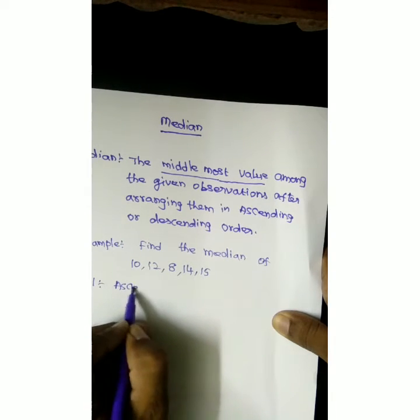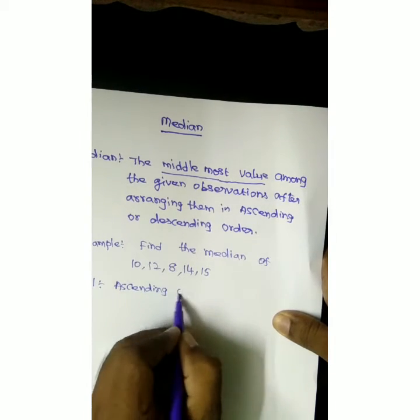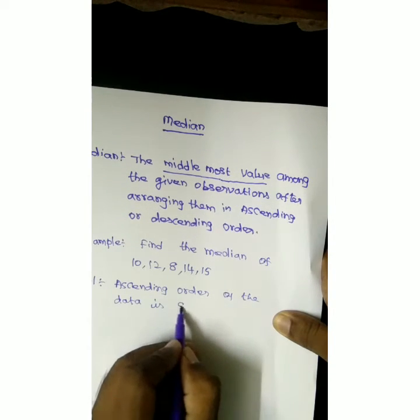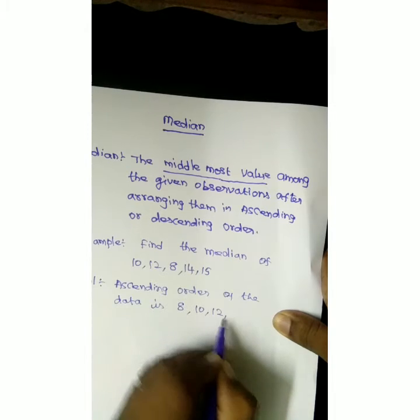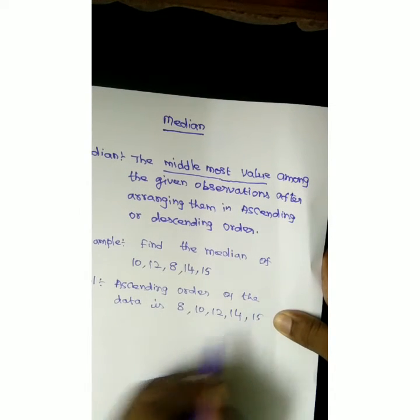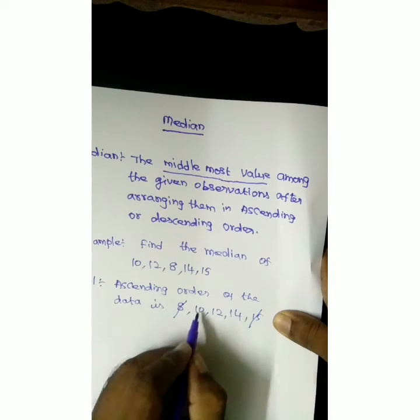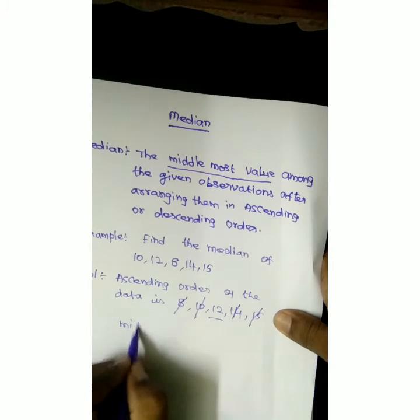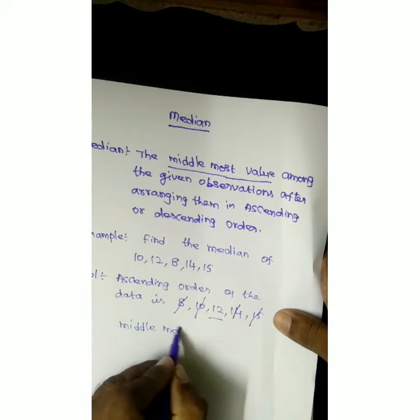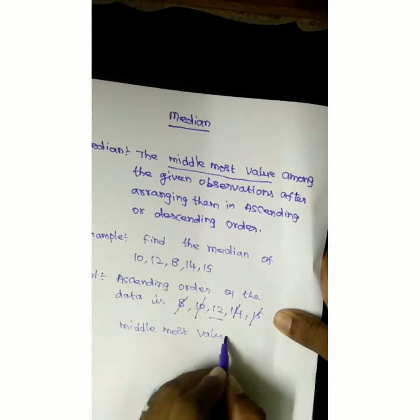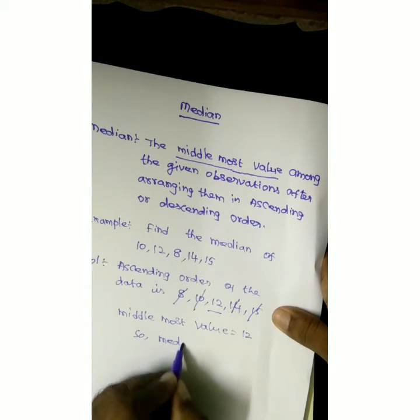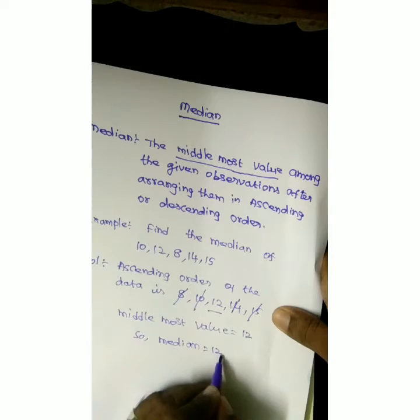Ascending order of the data: the least value is 8, then 10, 12, 14, 15. Now cancel from both ends. 12 is left in the middle — the middlemost value — equal to 12. So, median is equal to 12.